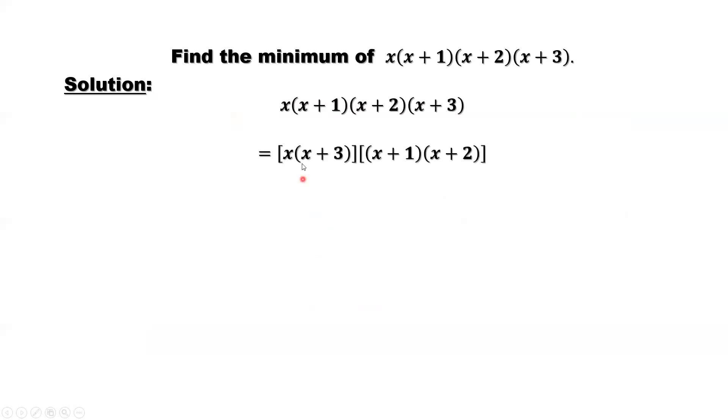We group the first and the last, then the second and the third. Why are we doing this? Here is the reason. Just look at it. The first term times last term, we simplify. We can say that's x squared plus 3x. The second group, that's x squared plus 3x plus 2.